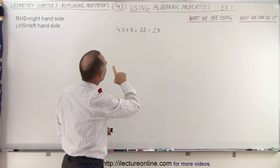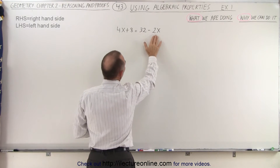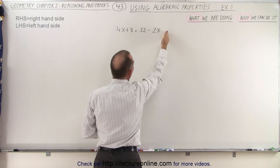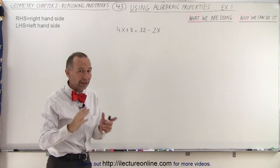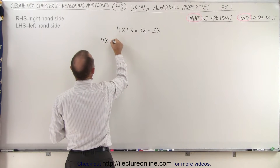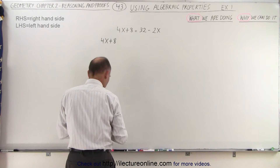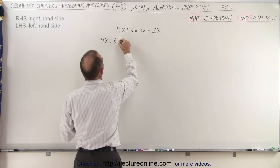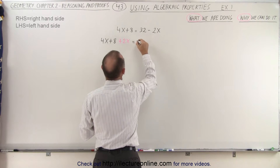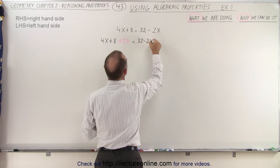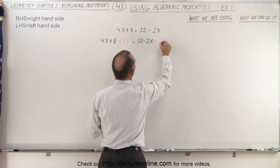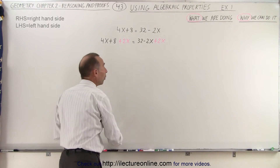First I look at this and I want to get rid of the minus 2x on the right side. So I can add 2x on the right side, but of course I have to do exactly the same thing on the left side. So we have 4x plus 8, and I'm going to add plus 2x on the left side, and that should equal 32 minus 2x, and I have to add the same thing to the right side.